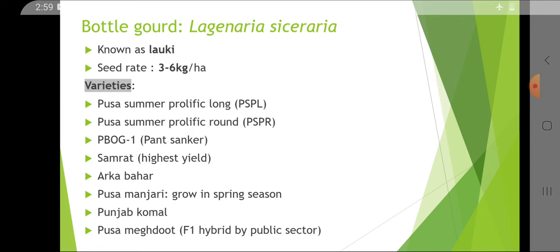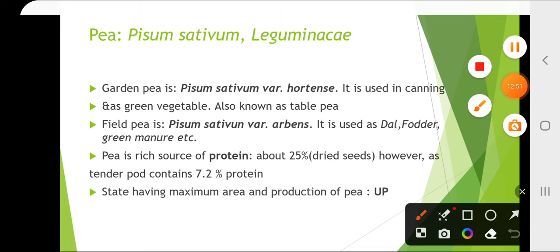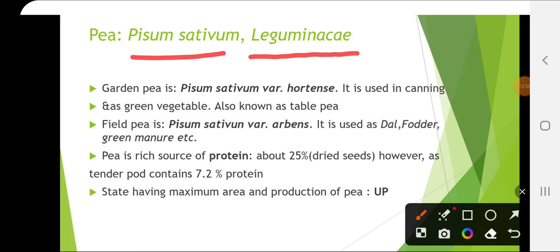The next crop is pea, belonging to the Leguminaceae family — Pisum sativum. Garden pea is Pisum sativum variety Hortense, used as a vegetable, while field pea is Pisum sativum variety Arvense, used for fodder or seed purpose. Garden pea is used for canning and eaten as a green vegetable, also known as table pea.